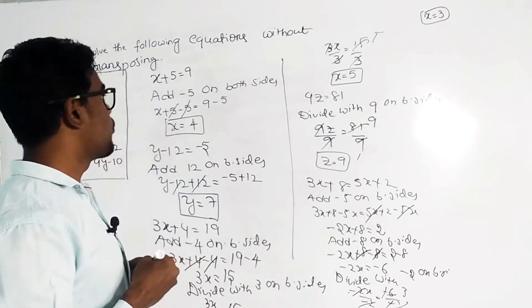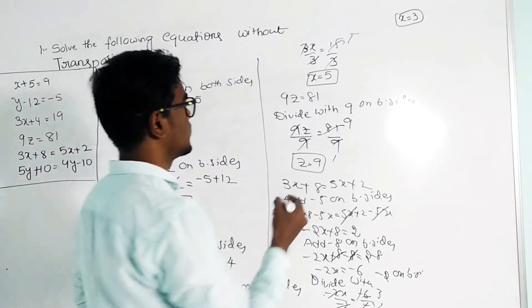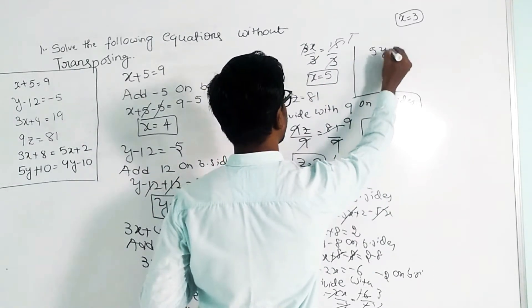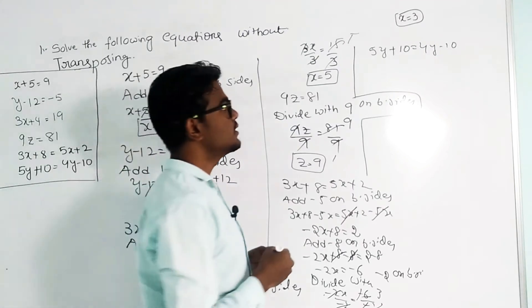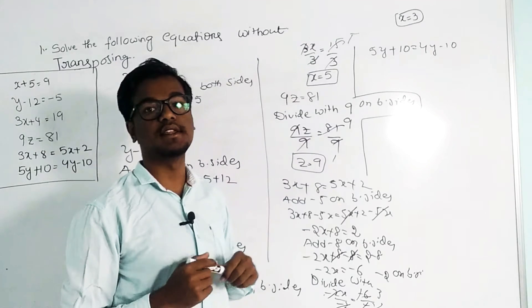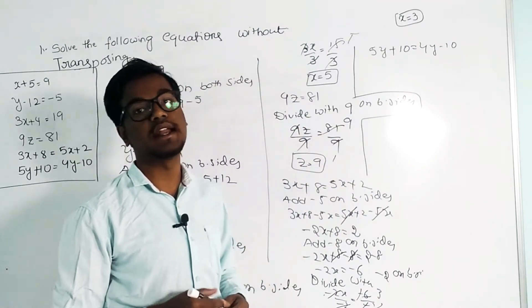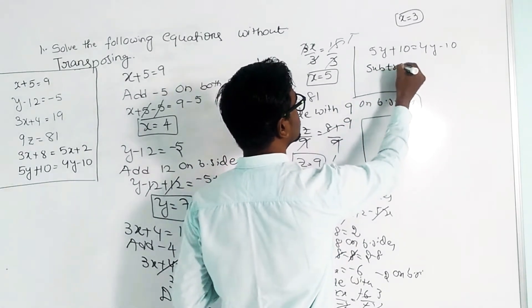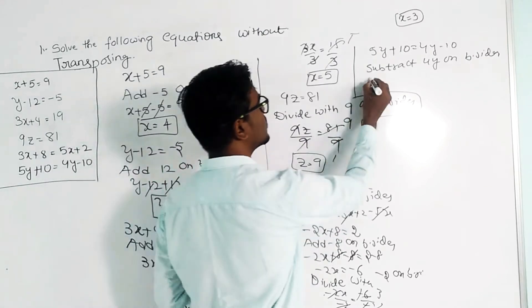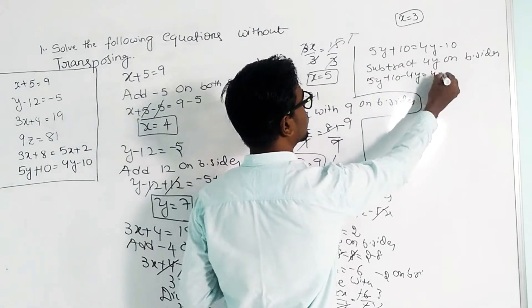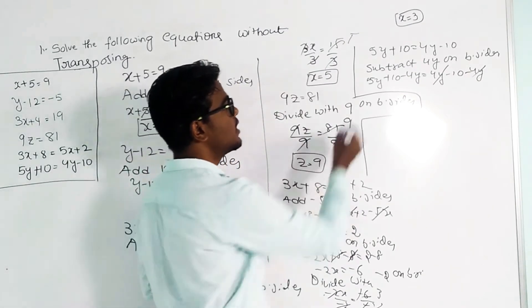Next one is 5y plus 10 equals 4y minus 10. Here 5y is on the left side and 4y is on the right side. We subtract 4y from both sides: 5y plus 10 minus 4y equals 4y minus 10 minus 4y; the 4y terms cancel, and 5y minus 4y remains on the left.